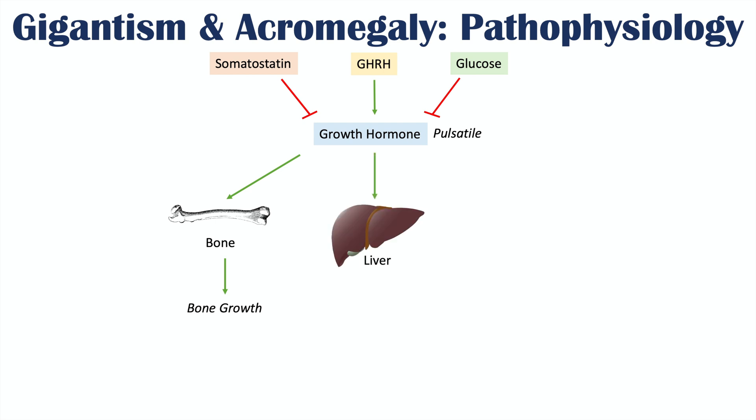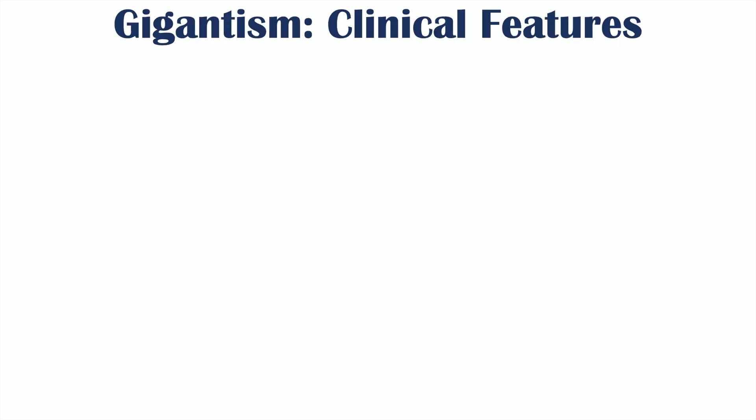Growth hormone also acts on the liver to induce production of insulin-like growth factor 1 (IGF-1), which plays roles in bone growth, other tissue growth, and regulating glucose levels. Growth hormone itself can also act on other organs and tissues to cause their growth and proliferation, including growth of organs, soft tissue, and cartilage — important for understanding the clinical features of these conditions.